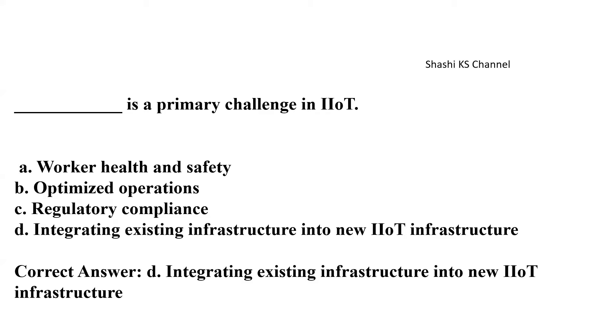Next, dash is a primary challenge in I-IoT. I-IoT stands for industrial internet of things. So worker health and safety, optimized operations, regulatory compliance and option D is integrating existing infrastructure into new I-IoT infrastructure. So the right answer to this is option D, integrating existing infrastructure into new I-IoT infrastructure.